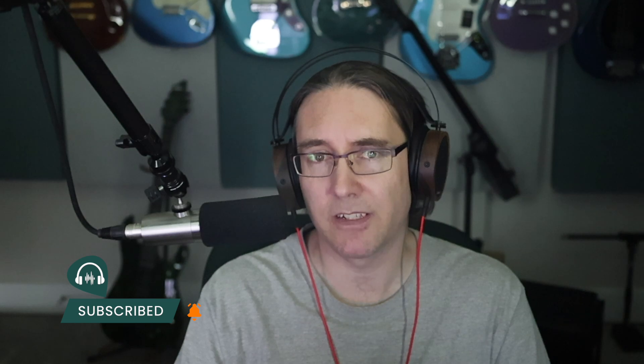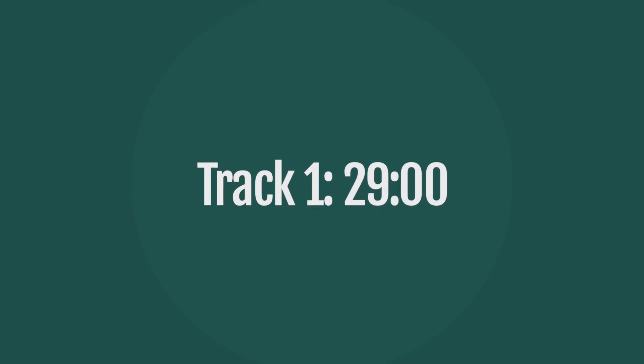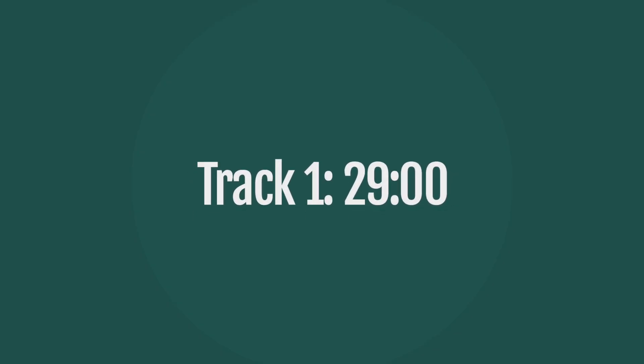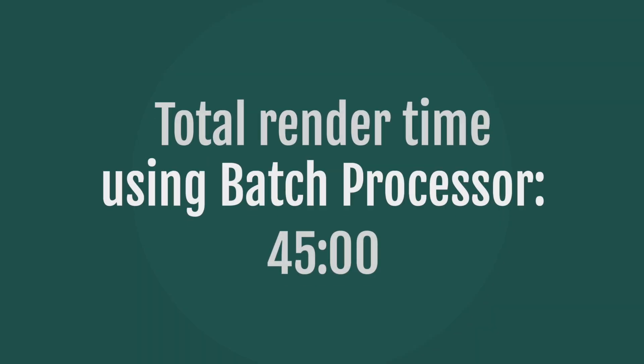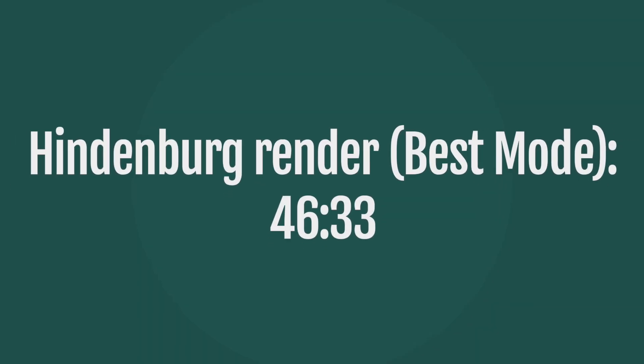I figured, why not — I'll try out the editor to see how much faster it is than simply dealing with the slower render times in Hindenburg. I processed both tracks in the batch processor, and it took 29 minutes for track one and 30 minutes for track two. So we'll call it 30 minutes to process, plus about 15 minutes to render the mixed and edited episode inside Hindenburg. That brings the total to 45 minutes, which is about 90 seconds faster than the original Hindenburg render. However, in most cases I'll have to clean up each track individually and wait for each one to process.